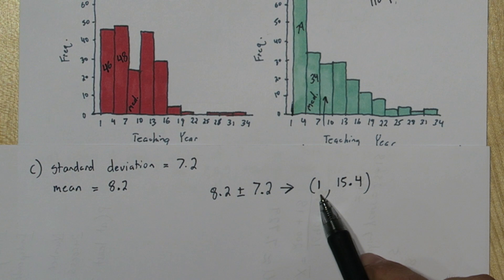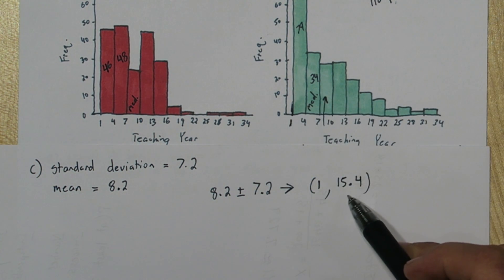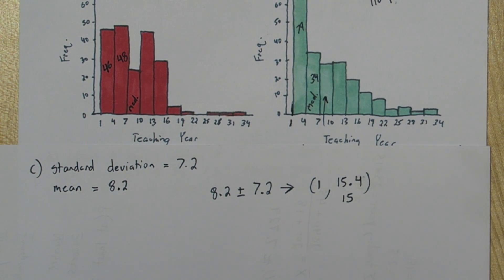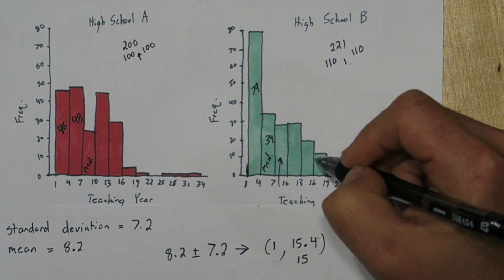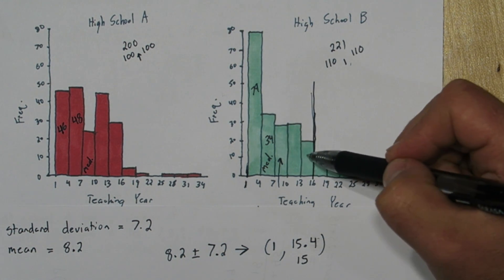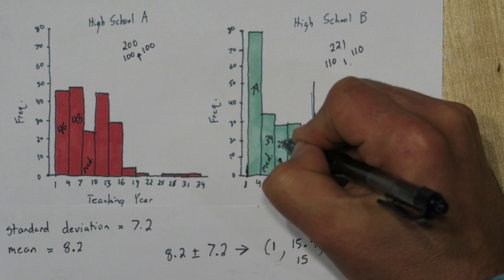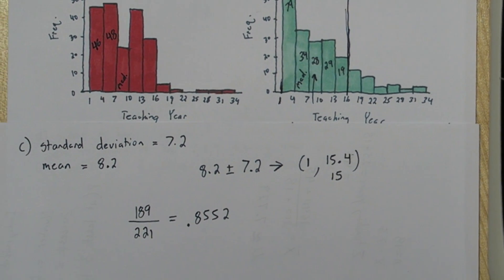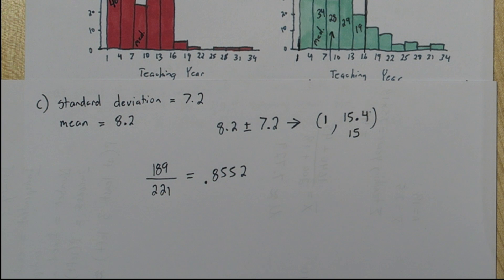This is nice that we have a 1 here, because we have that nice clean cutoff here at 1. So where would 15.4 lie? Actually, all the data is integers, so there would be no 15.4. So really what we're interested in is it being from 1 to 15, since 16 wouldn't lie in this interval. That means every teacher within one standard deviation of the mean is in one of these bins right here. We already have the frequencies from the first two bins from part A. If we calculate the frequency of these other three bins, then we'll know the exact number of teachers within one standard deviation of the mean. So it turns out 189 of the teachers have a teaching year between 1 and 15. So if we divide that 189 by the total number of teachers at high school B, 221, we get 0.8552.